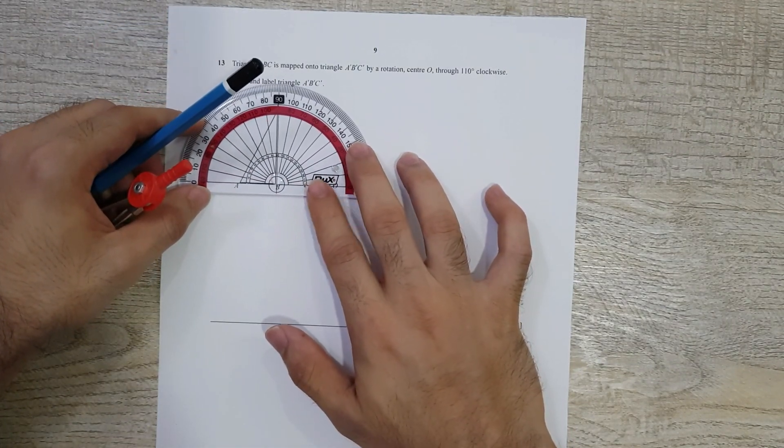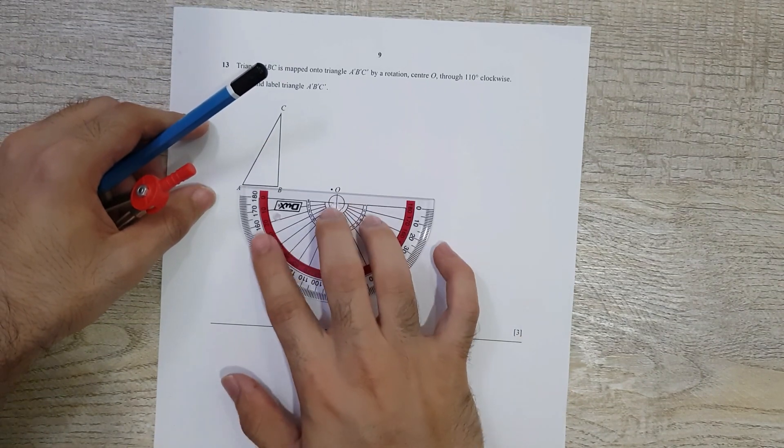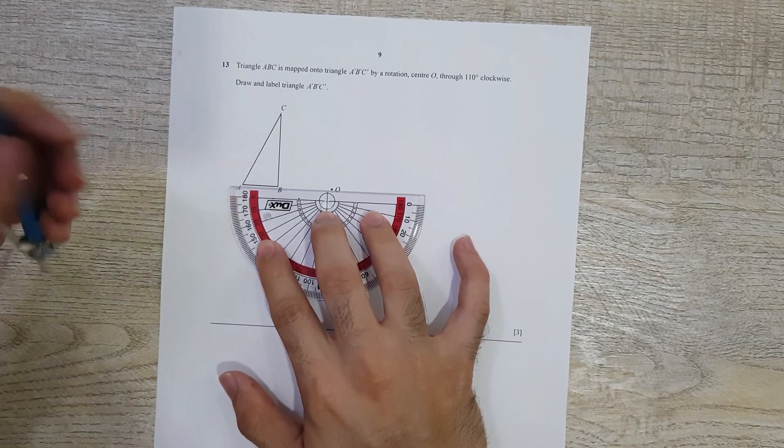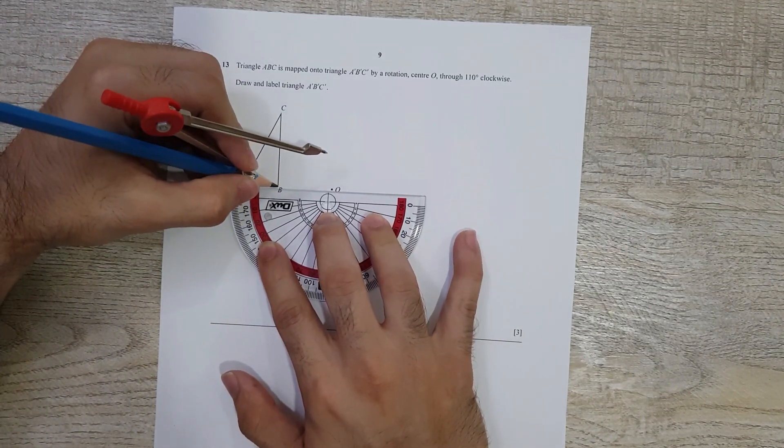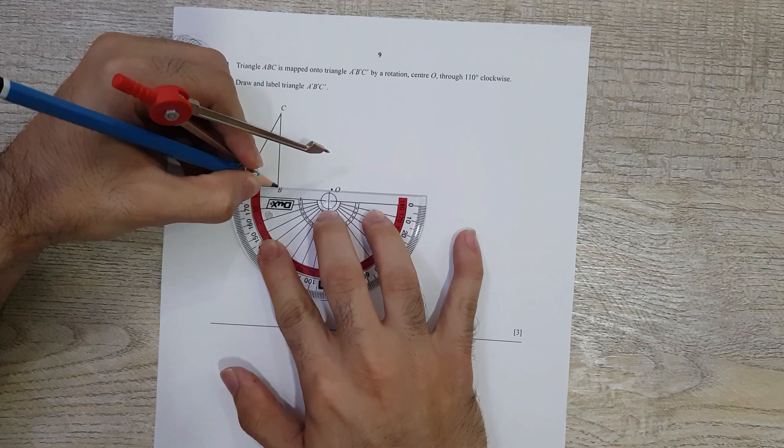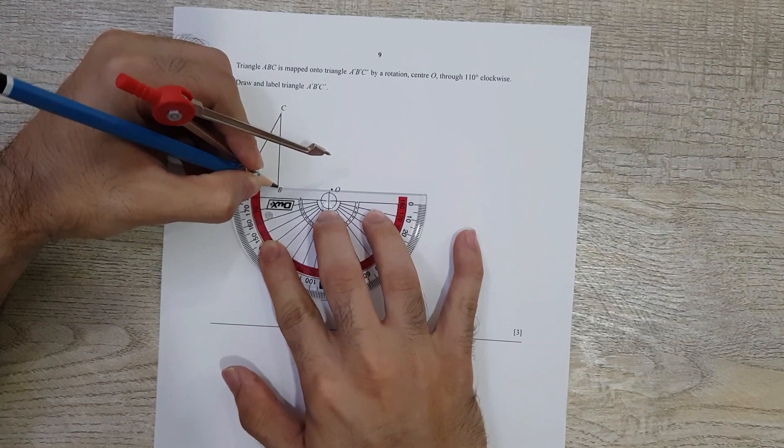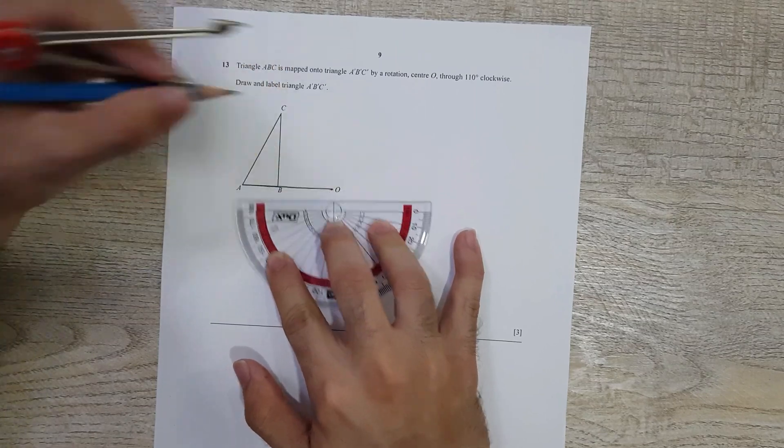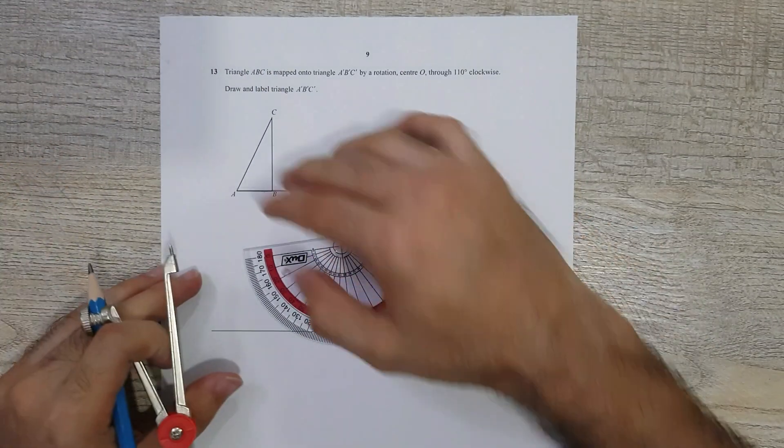The first thing you've got to do is join the two points—in fact all three points—with the center. I'm going to do this one by one. So I'm joining B with O. Here is B, and on the same line we will also have A, which I've joined to the center, which is O.